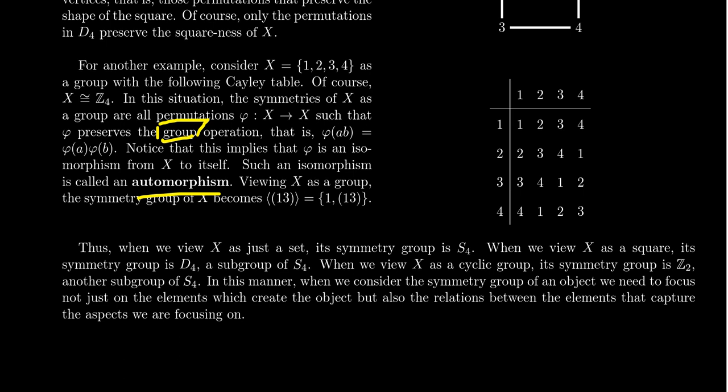Morphism means something that measures the shape — 'morph' means shape. 'Auto' actually means self, like an automobile is a self-moving object. If we're looking for the symmetries of a group, these are called automorphisms of the group. For a group structure, the symmetries are these automorphisms. Now, any homomorphism will send the identity to itself, so the identity element is distinguishable. If you grab a random element from the group — imagine a bag of marbles — you can tell if you grabbed the identity by how it acts with all other elements.